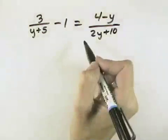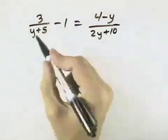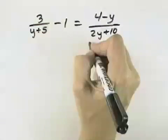Here we want to solve this rational equation. To do so, we want to multiply both sides by the least common denominator in order to get rid of our fractions.